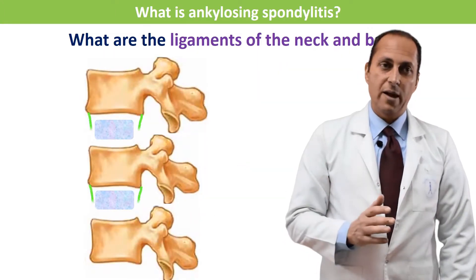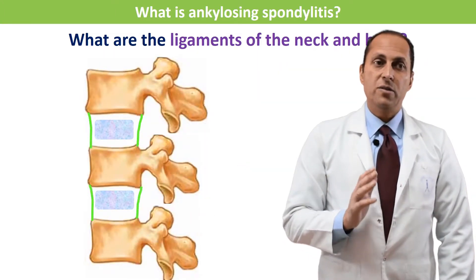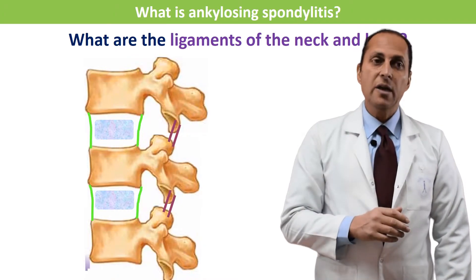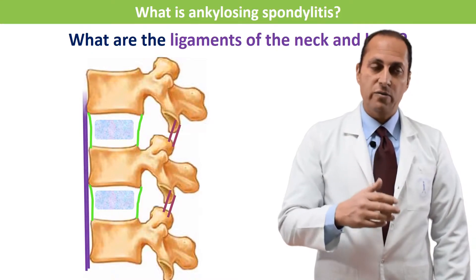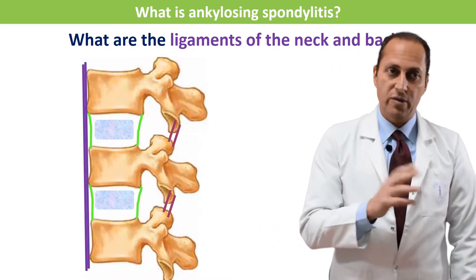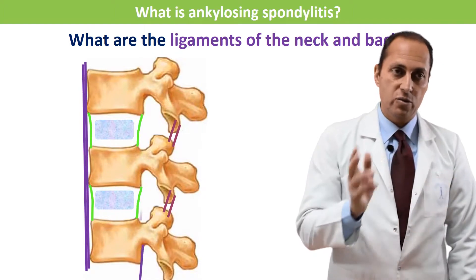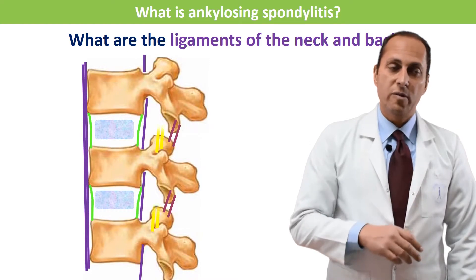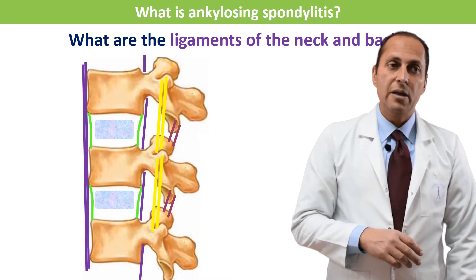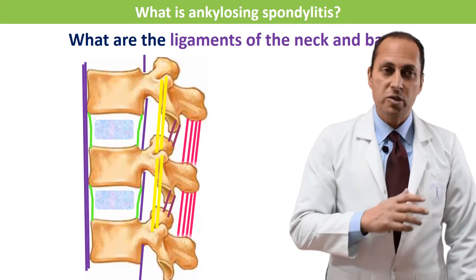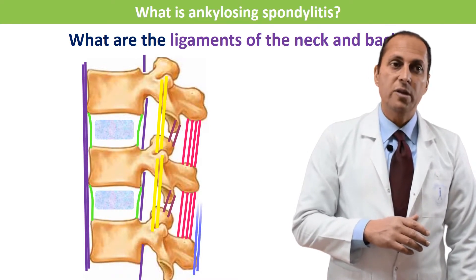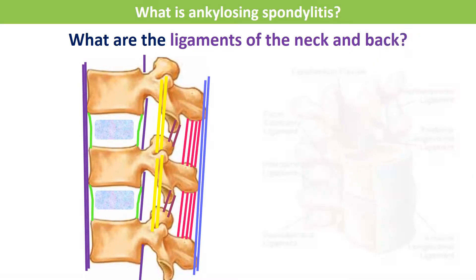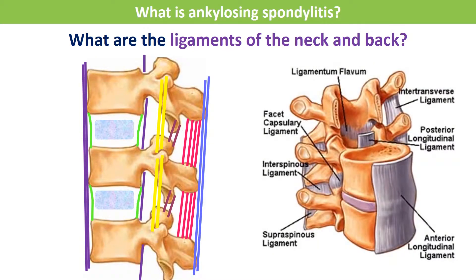What are the ligaments of the neck and back? There are many. There are ligaments between the bodies of two vertebrae and also ligaments between the arches of the vertebrae — both in the front joint and the back joint. There is a ligament joining all the anterior parts of the bodies of the vertebrae, another joining all the posterior parts, and several connecting the arches of the vertebrae. This is how they look in our medical books.